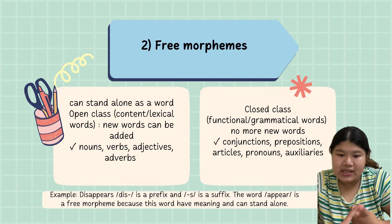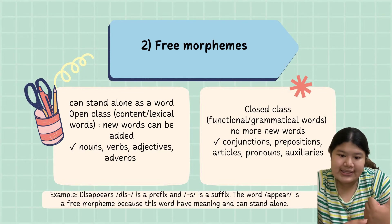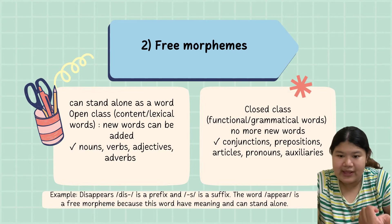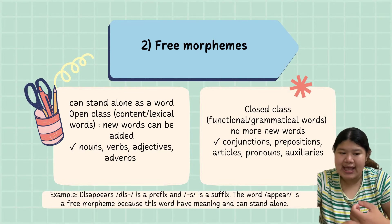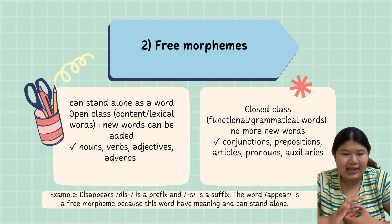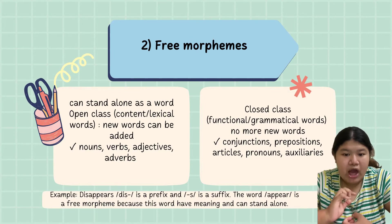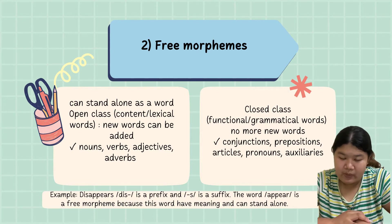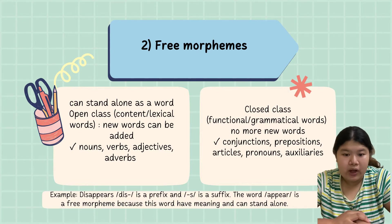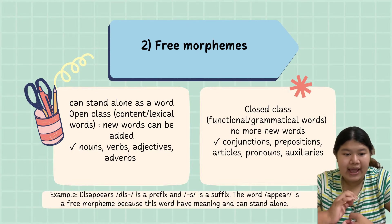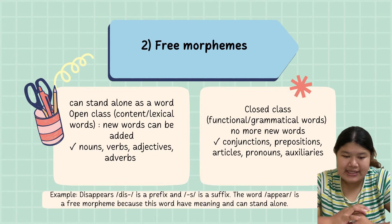Example: disappear. 'Dis' is a prefix and it is a bound morpheme. The word 'appear' is a free morpheme because this word has meaning and can stand alone.